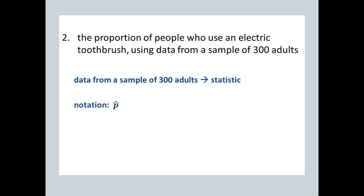Number two, the proportion of people who use an electric toothbrush using data from a sample of 300 adults. Again, data is coming from a sample, from a sample of 300 adults. If the data is coming from a sample, we have a sample measure, so it's a statistic, and more specifically, this is a sample proportion, so the correct notation is p-hat.